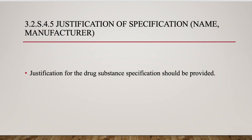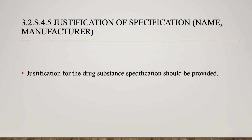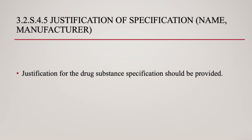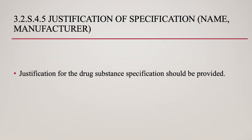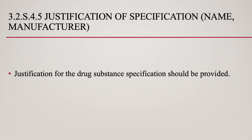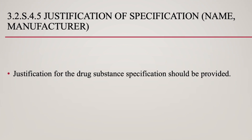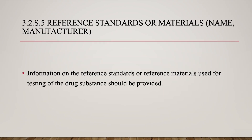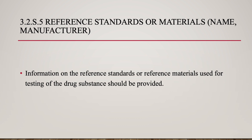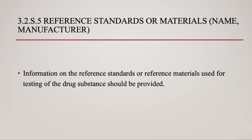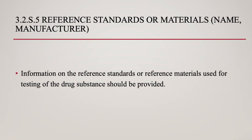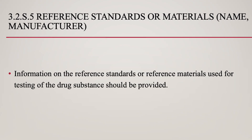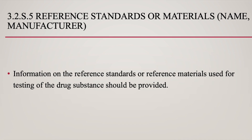3.2 S.4.5 Justification of Specification — name, manufacturer. Justification for the drug substance specification should be provided. 3.2 S.5 Reference Standards or Materials — name, manufacturer. Information on the reference standards or reference materials used for testing of the drug substance should be provided.